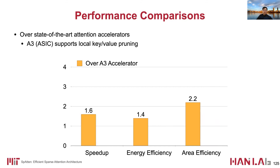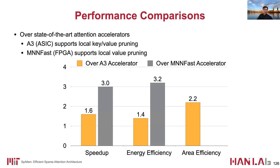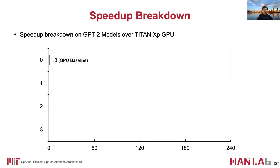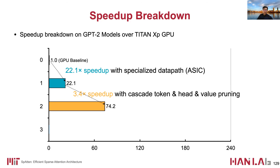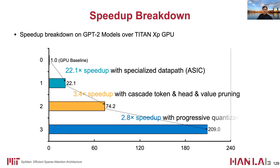We also compare Spartan with state-of-the-art attention accelerators. A3 is an ASIC design with support for local key and value pruning — Spartan achieves 1.6× speedup and 1.4× energy savings over A3. MNFast is an FPGA design with local value pruning support, and Spartan achieves over 3× speedup and energy savings. Breaking down the speedup of Spartan on GPT-2 models over GPUs: with specialized data paths, we achieve 22.1× speedup; all pruning techniques together bring another 3.4×; and progressive quantization further brings 2.8× speedup.